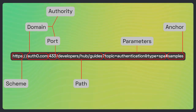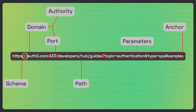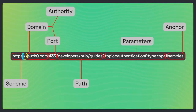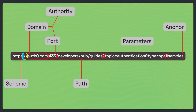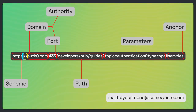The scheme and the authority are separated by a colon followed by two forward slashes. If the URL has no authority, the scheme and the rest of the URL are separated only by a colon. A typical example of a URL without an authority is the URL that represents an email address, such as mailto:yourfriend@somewhere.com.